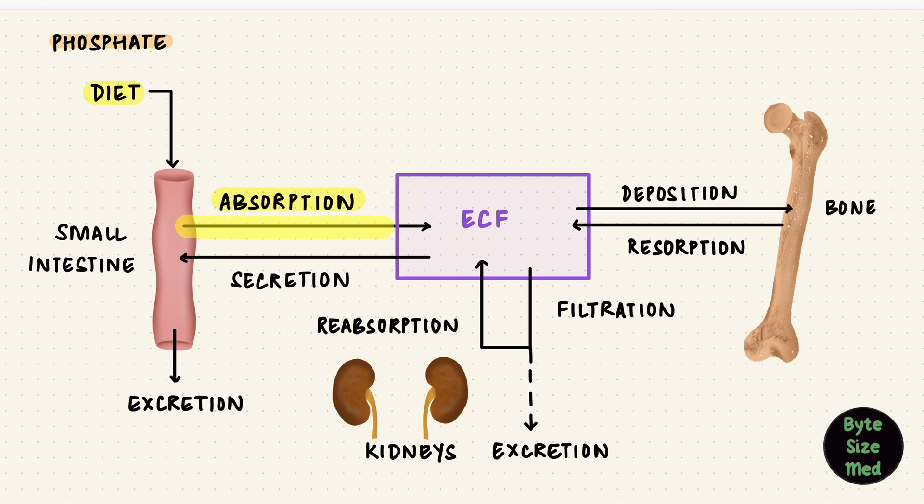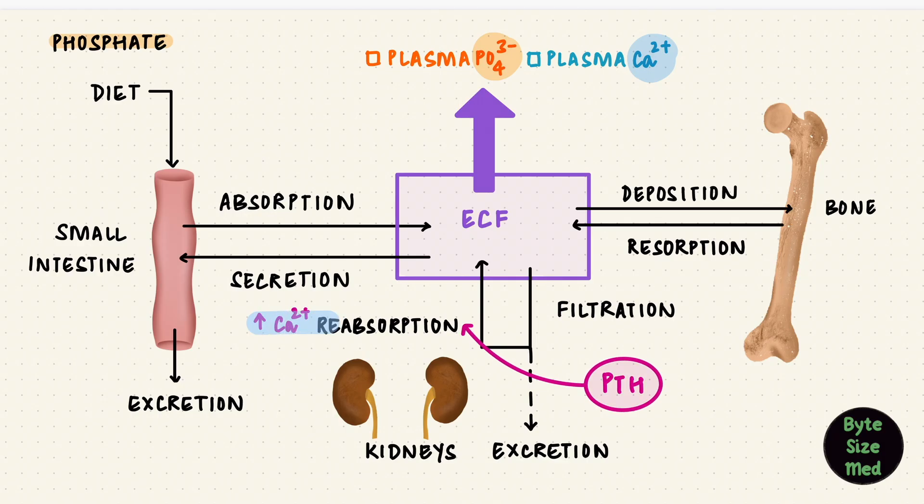Phosphate too gets absorbed in the small intestine. It gets secreted in GI secretions and gets excreted. It can exchange with bone. And it gets filtered, reabsorbed, and excreted by the kidneys. Plasma phosphate levels and also plasma calcium levels will change what happens here. Phosphate levels can change what happens to calcium, and calcium can change what happens to phosphate. Because hormones, like for example the parathyroid hormone, which increase calcium reabsorption by the kidneys, can increase phosphate excretion as well. So they go together, calcium and phosphate. And in part 2, we'll look at how the kidney handles them.